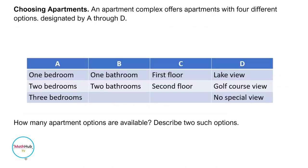Choosing apartments. An apartment complex offers apartments with four different options designated A through D. Option A: three choices — one bedroom, two bedroom, or three bedrooms. Option B: one bathroom or two bathrooms. Option C: first floor or second floor. Option D: lake view, golf course view, or no special view. We want to determine how many different apartment options are available and describe two such options.